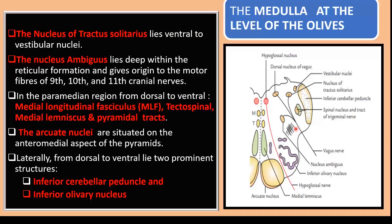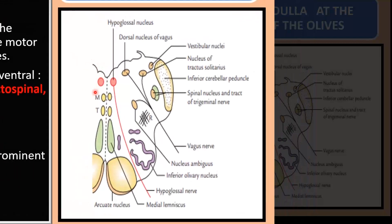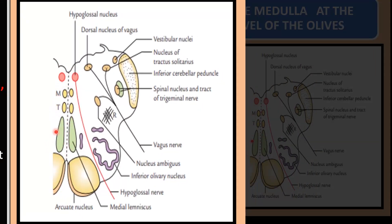In the paramedian region, we can pick out a number of tracts. We see the medial longitudinal fiber. Moving anterior to it, we see the tectospinal tract. Moving more medially, we see the medial lemniscus — which we first encountered at the level of sensory decussation. Anterior to this is the pyramid. We also have the arcuate nucleus, situated anterior and medial to the pyramids.